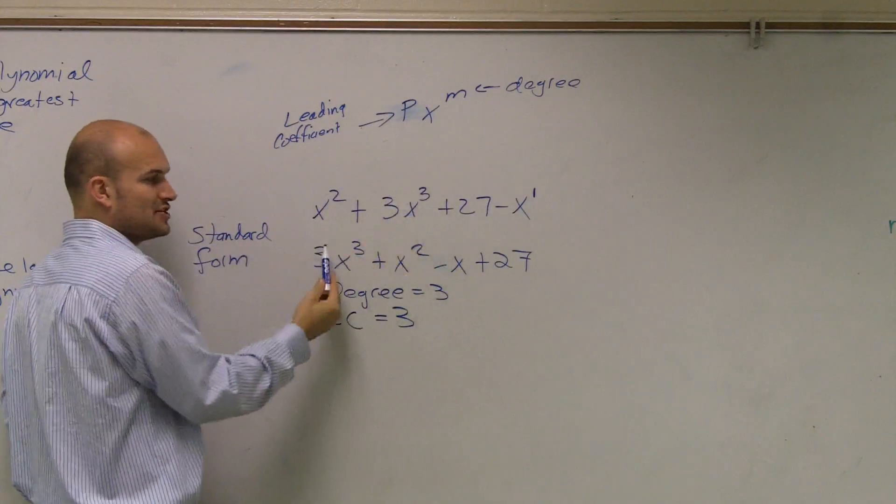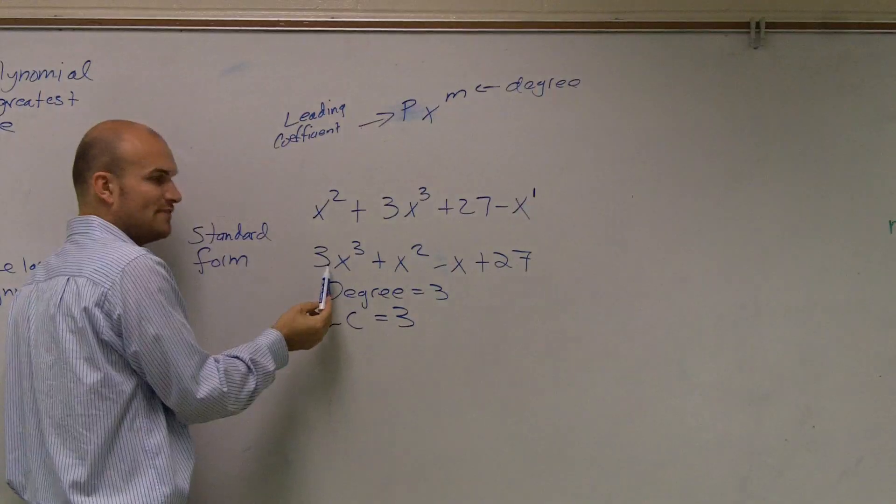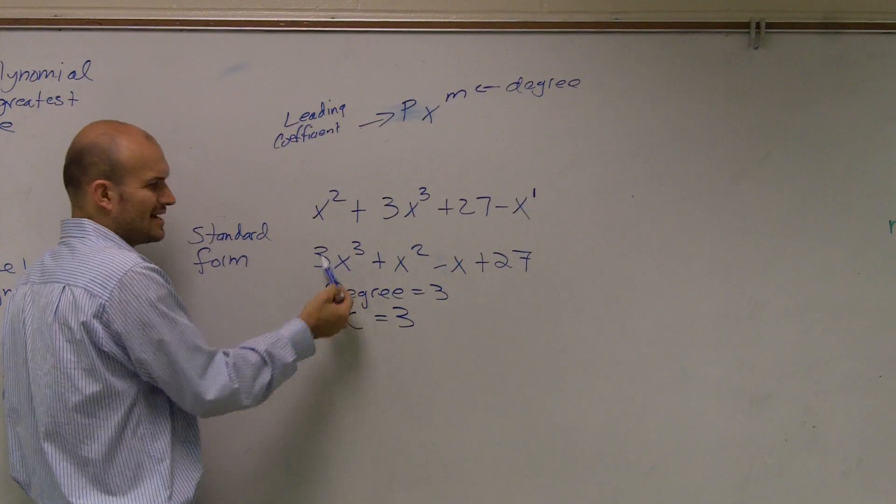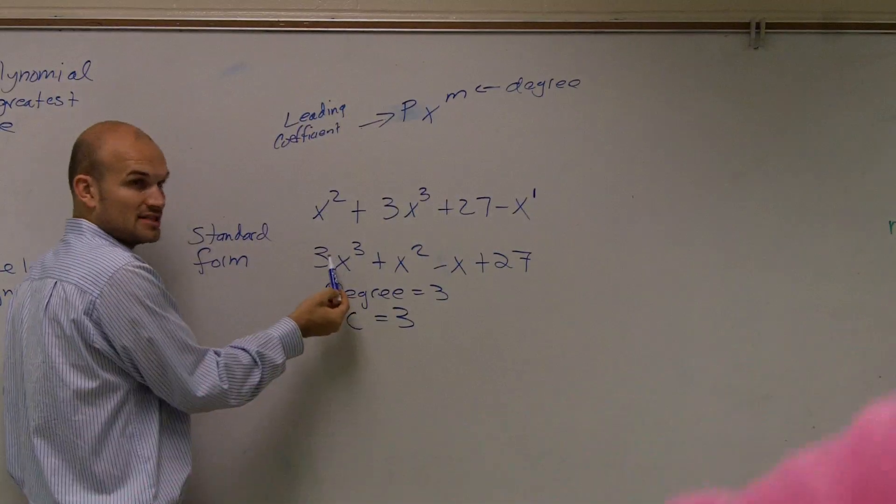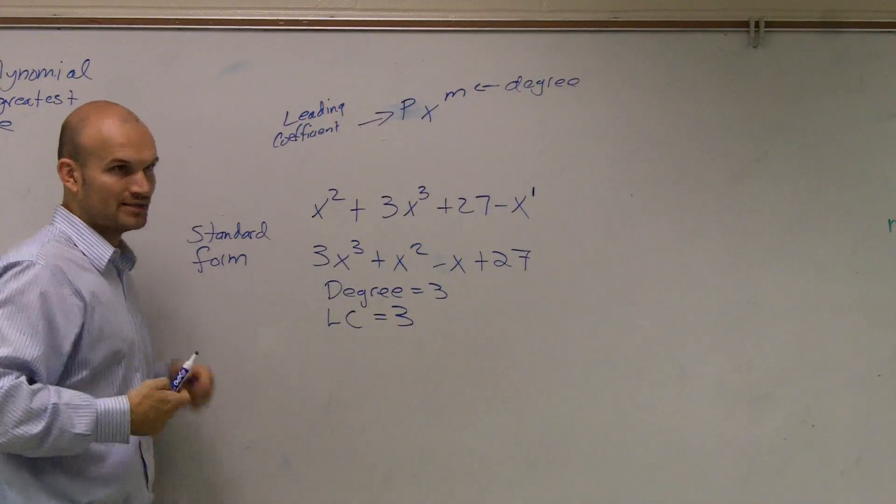So what you do is you arrange it from greatest degree to least degree. Then that coefficient of your greatest degree is your leading coefficient. See how it kind of leads? It's like the front, the first one. That's why it's your leading coefficient—it leads your polynomial into battle.